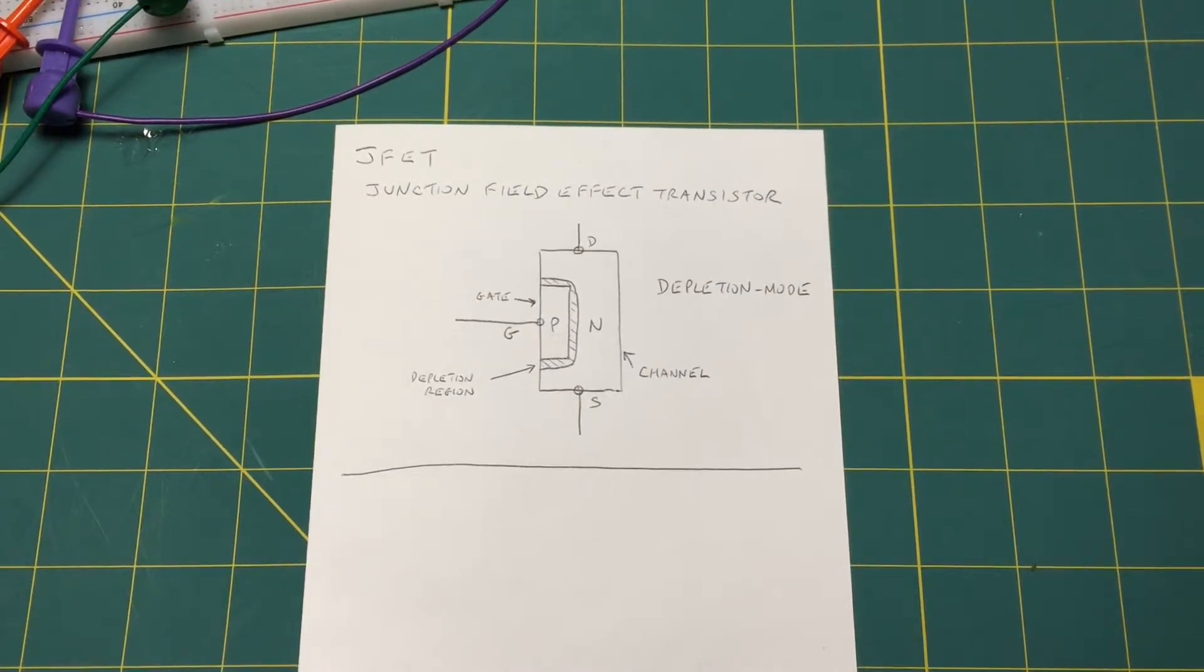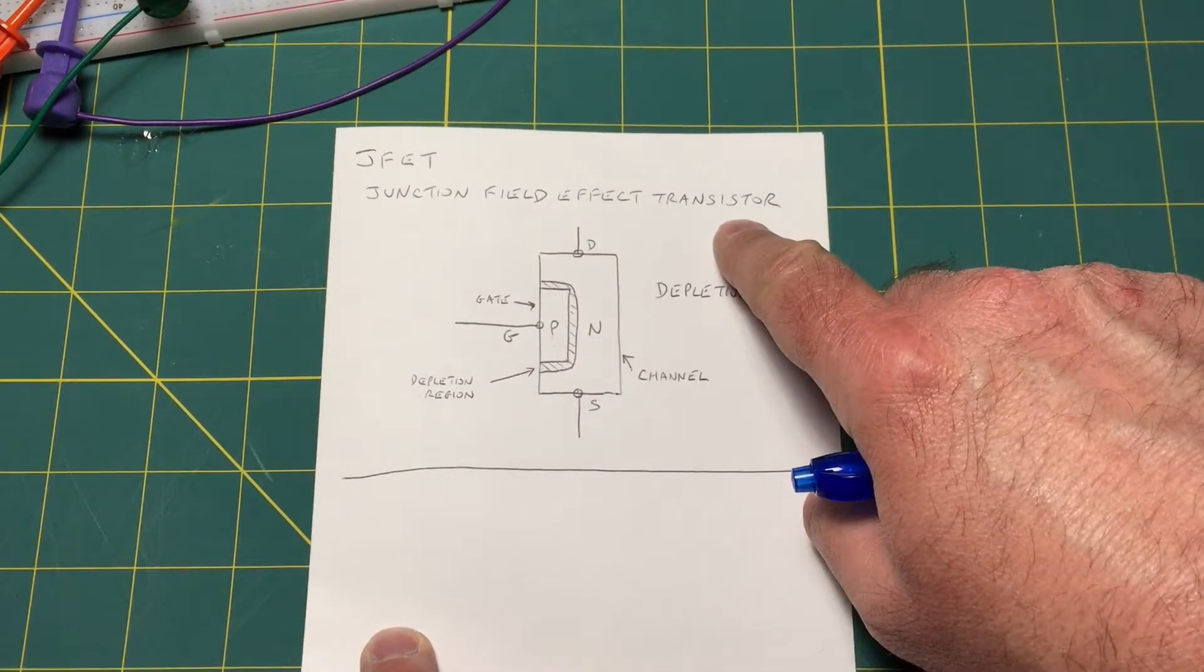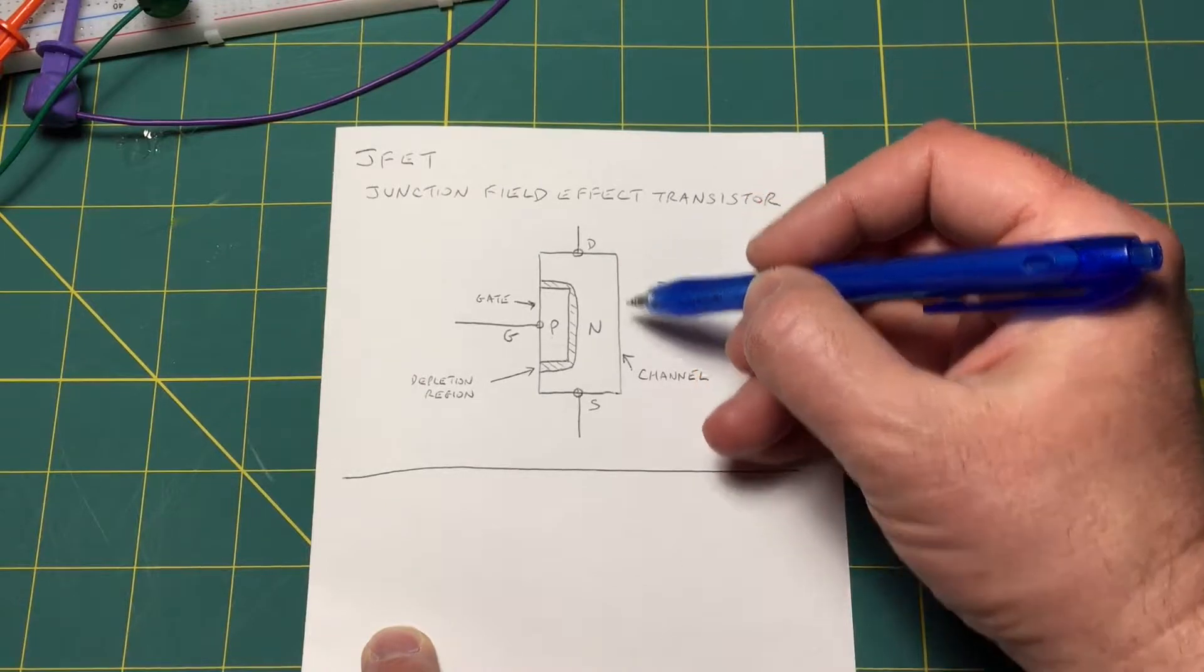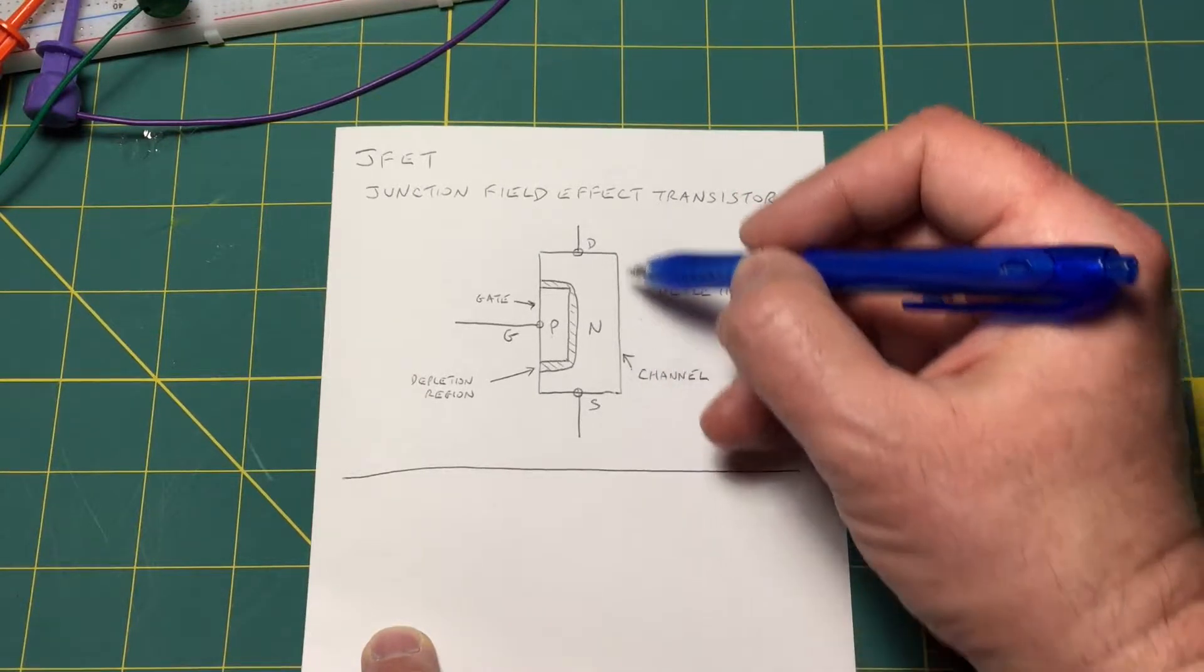Welcome to Network 13 and today we're going to learn about JFETs. A JFET is a Junction Field Effect Transistor and it consists of a channel made of semiconductor material.